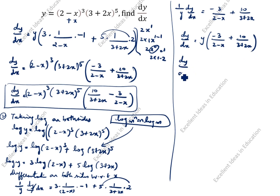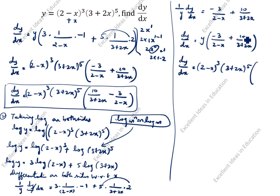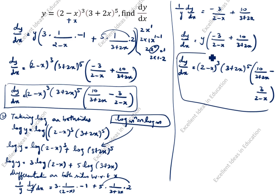Substituting the value of y: dy/dx = (2−x)³·(3+2x)⁵ · [10/(3+2x) − 3/(2−x)]. This is the second method. Thanks for watching this video.